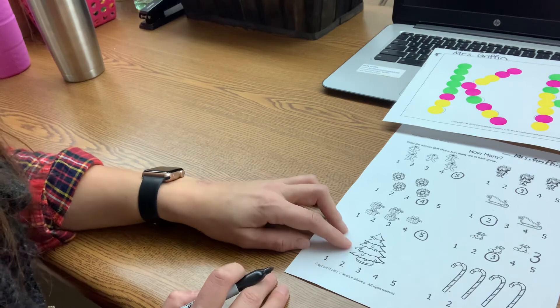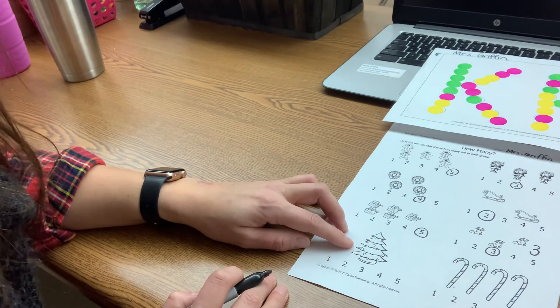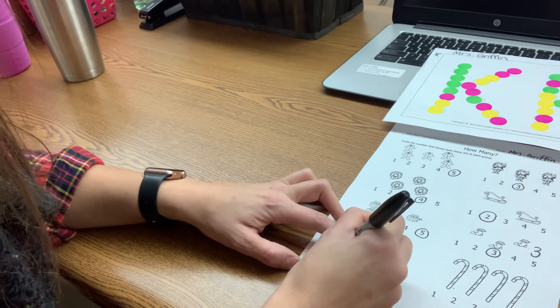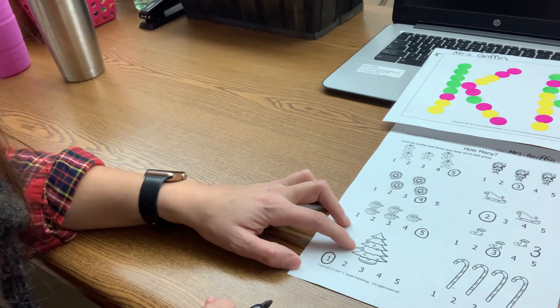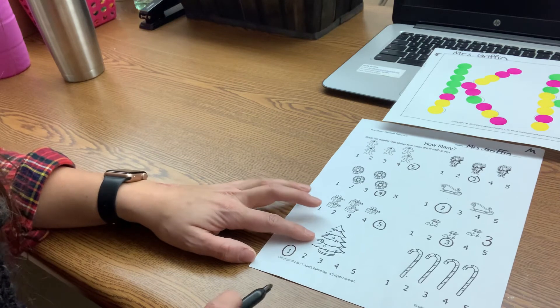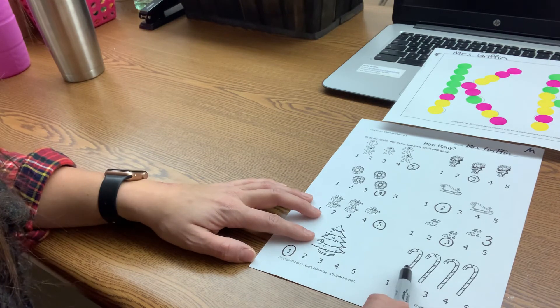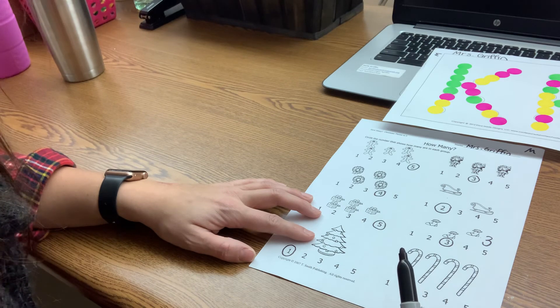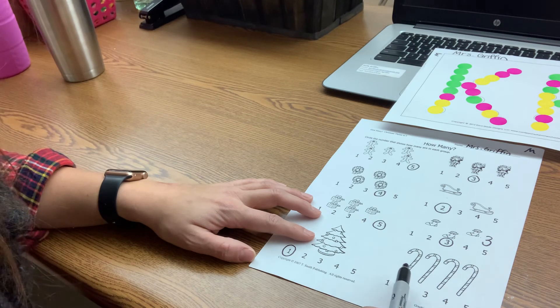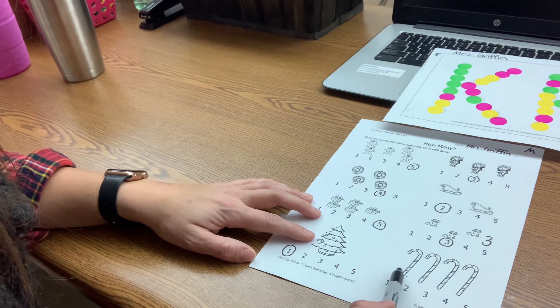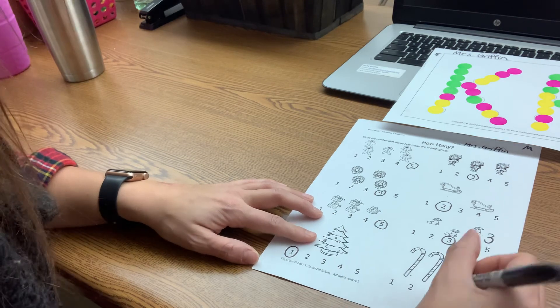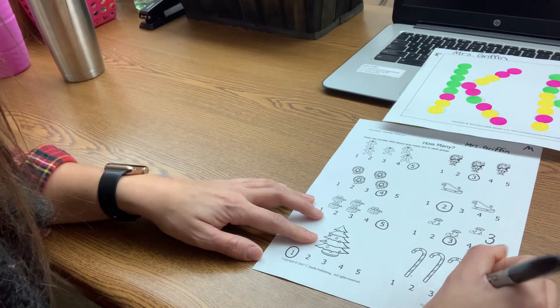All right. Oh, I see only one thing here. What is it? It's a Christmas tree. So I'm going to circle one because there's just one Christmas tree there. And the last thing are candy canes. Can we count them? How many did you get? One, two, three, four. Did you get four as well? Very good. And then I'm going to circle the number four.